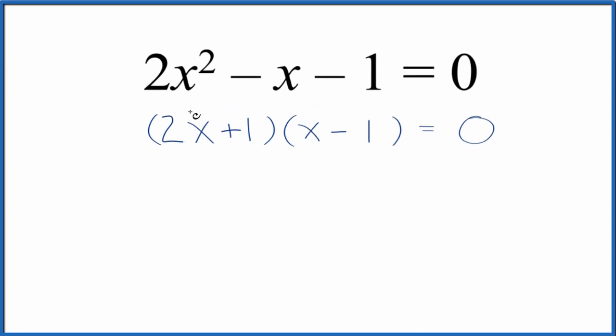So first term, outside term, inside term, last term. That's the FOIL method we end up with. And then we can combine the negative 2x and the x. That'll just give us negative x.